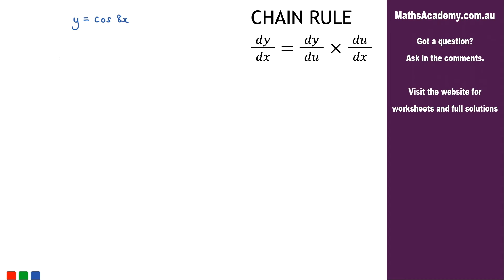The first step is to make a substitution. So we're going to let u equal 8x. We go ahead and we differentiate that. So du by dx, that will be equal to 8.